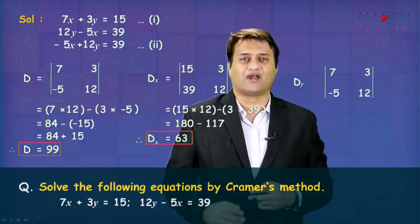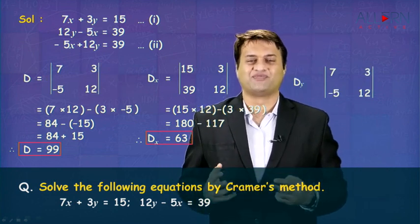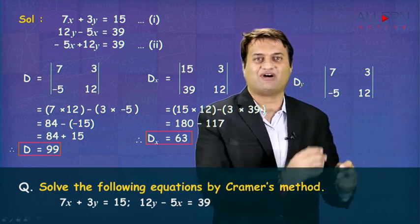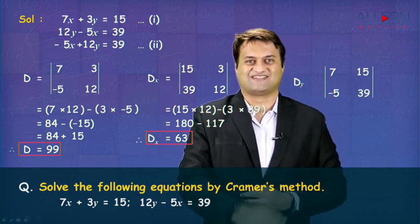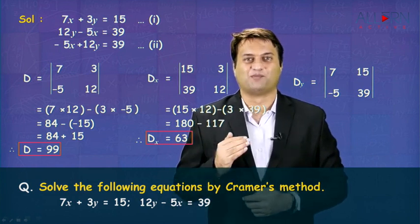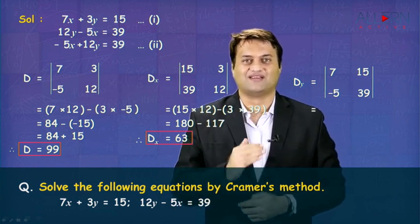Now, it is time for us to find the value of DY. DY, delete Y, delete the second column and replace it by constants. You get DY is equal to 7 minus 5, 15, 39.